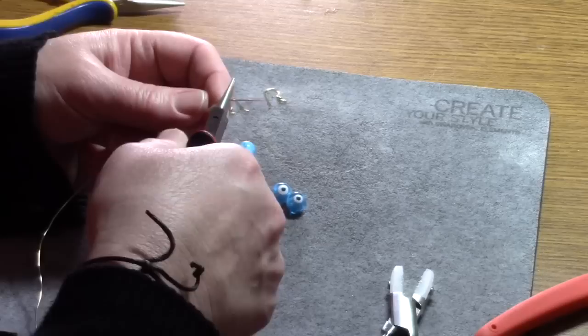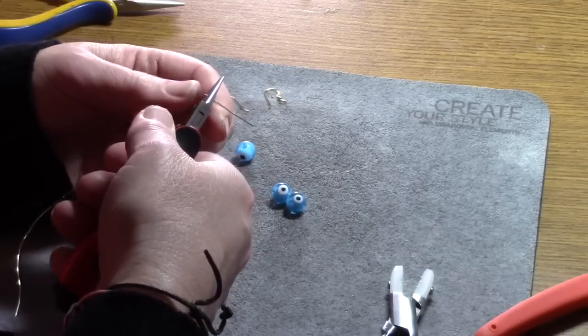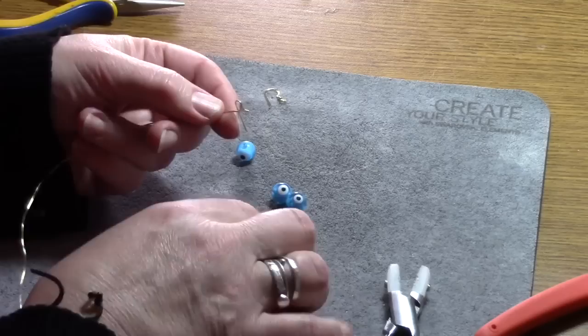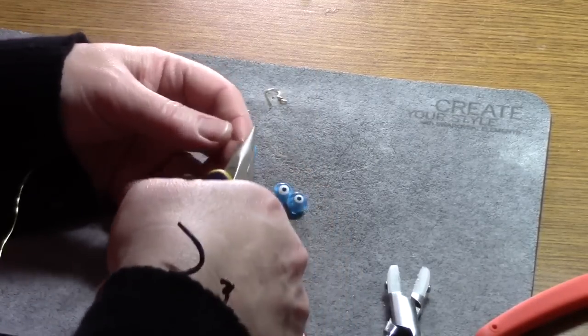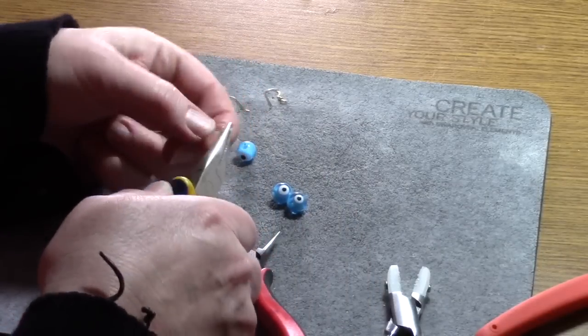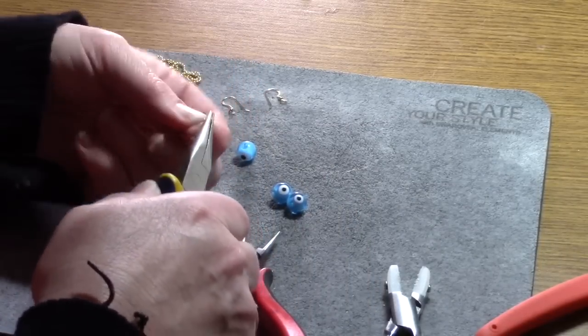The next thing I'm going to do is just a regular wrap loop. So I'm going to do a 90 degree angle, wrap the wire right around my pliers so I have a loop. Then I'm going to grab hold of that loop and just take that tail of wire and start to wrap it around the base wire.